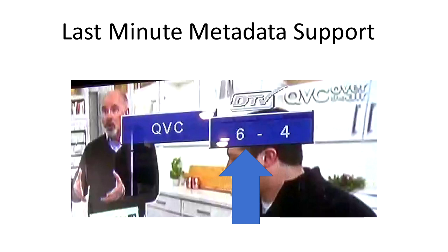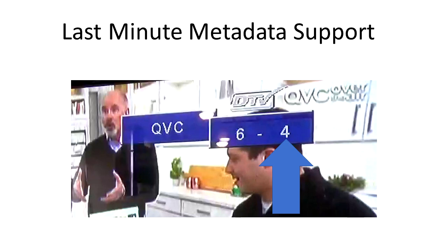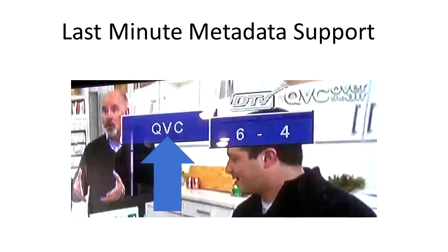For example, the channel for high definition ABC might be 55, but broadcasters wanted to continue to be identified by their analog channel number, so a virtual channel number system was implemented. Unlike analog programs, digital programs could carry multiple video streams, so you could actually get multiple programs per channel.